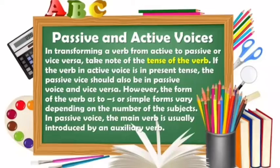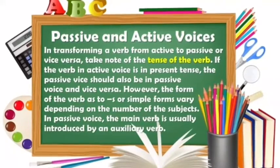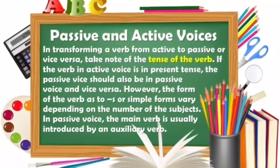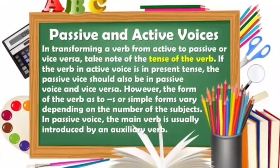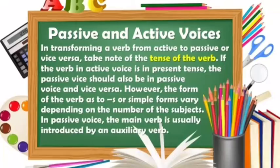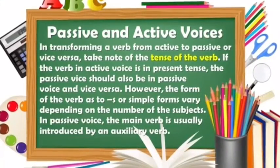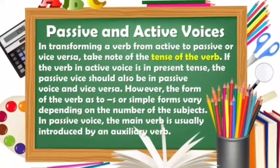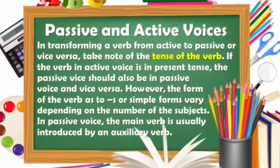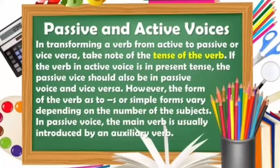In transforming a verb from active to passive or vice versa, take note of the tense of the verb. If the verb in active voice is in present tense, the passive voice should also be in present tense, and vice versa. However, the form of the verb — as to S or simple forms — varies depending on the number of the subjects. In passive voice, the main verb is usually introduced by an auxiliary verb.